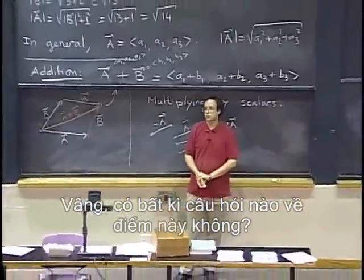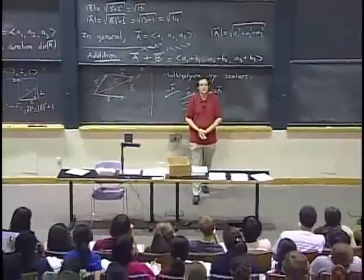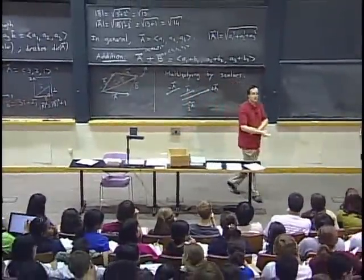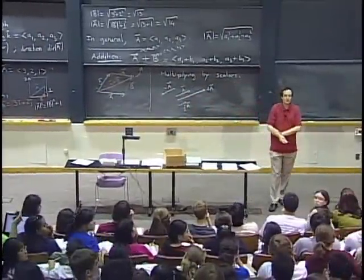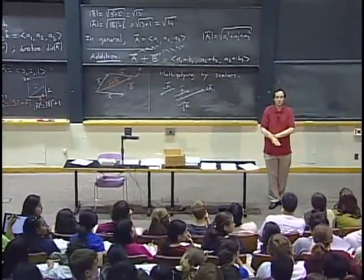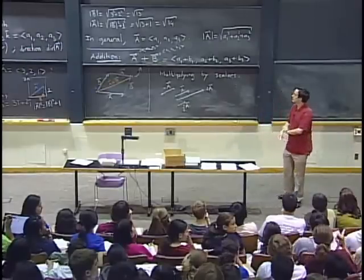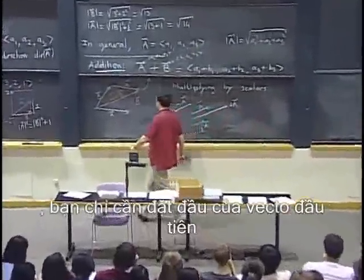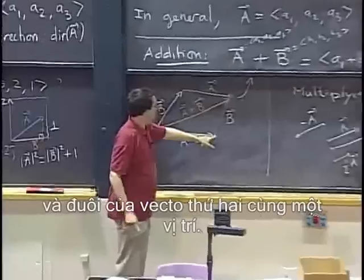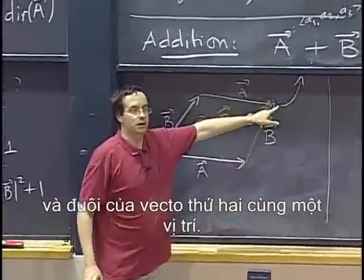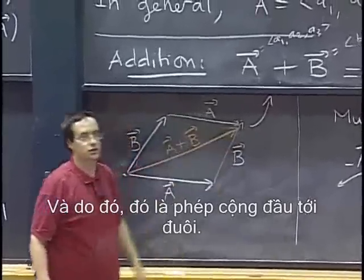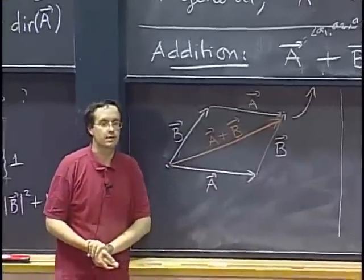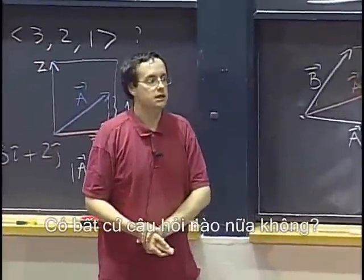OK, any questions at this point? Yes? So, for the geometric vector, it shouldn't be basically just using the tip-to-tail addition? Exactly. To add vectors geometrically, you just put the head of the first vector and the tail of the second vector in the same place, and then it's head-to-tail addition.